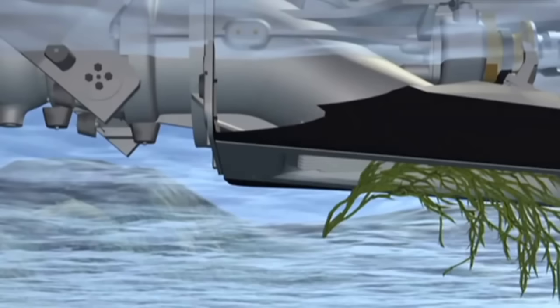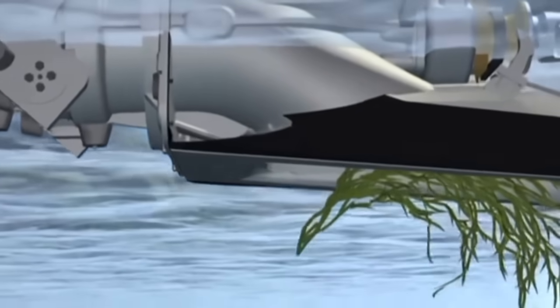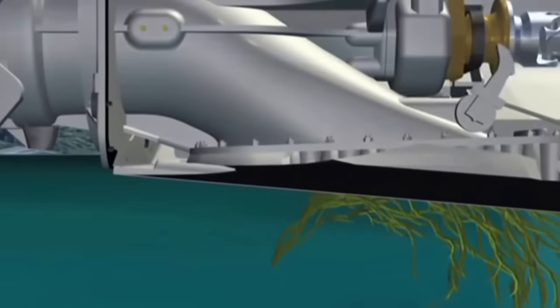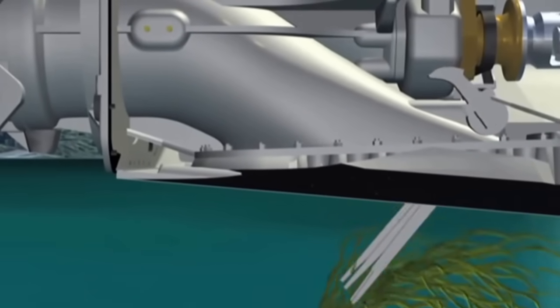If intake blockages are a common problem, you can have your waterjet fitted with an intake screen rake. Activating the screen rake lowers a set of bars down between the bars of the intake screen to push the blockage clear.